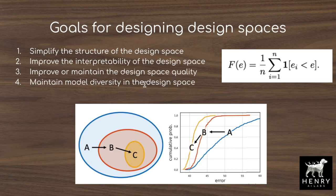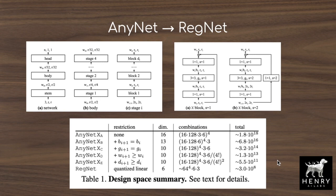The idea is that if you simplify the structure of the design space without damaging performance, you can interpret it better. As this table describes, they iteratively step through different design spaces, sample a population of networks parameterized by the design space at a given iteration, and then impose some restriction at the next step — limiting the degrees of freedom and reducing the number of possible networks from, say, 10^18 down to 10^8 possible neural networks that can be sampled.